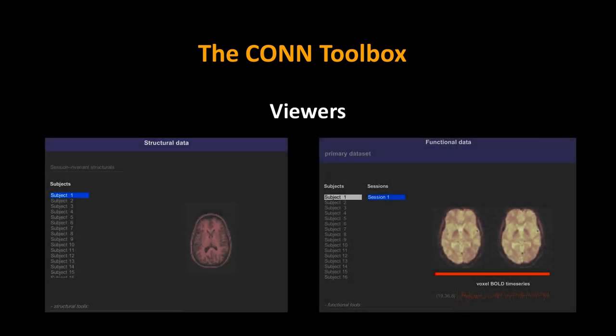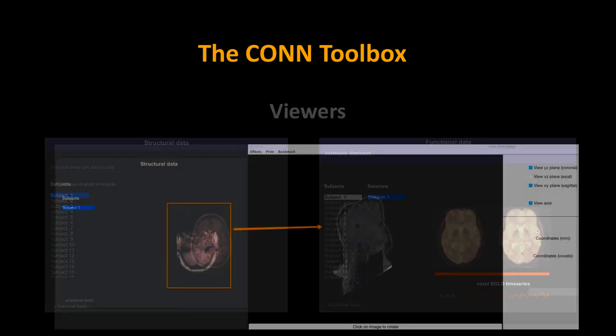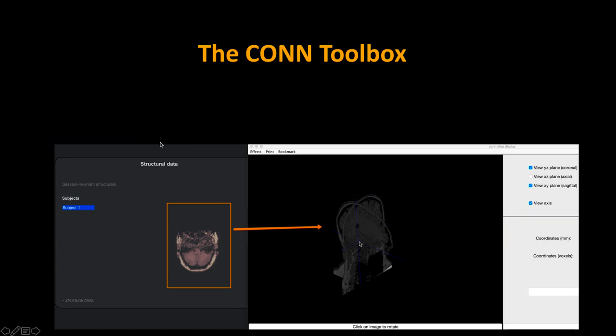The viewers in CONN are great for quality checks and will be covered in the first session tomorrow. After you load everything, you can view all the images in different formats — not just 2D planes, but within CONN's own viewer. Since it's tightly coupled with SPM, you can also open images in the SPM viewers as well. If you know SPM, you've already learned a lot of the CONN toolbox functions.